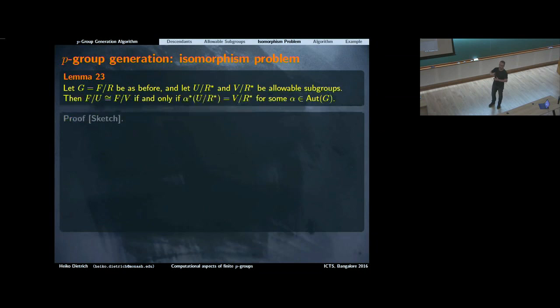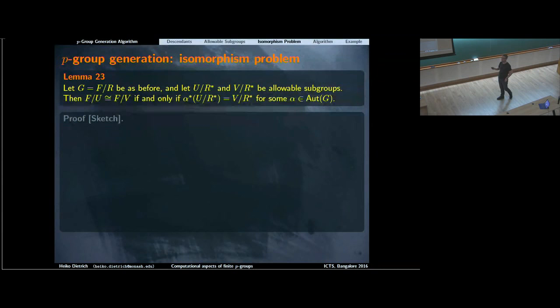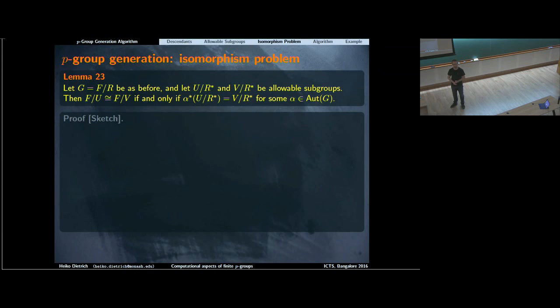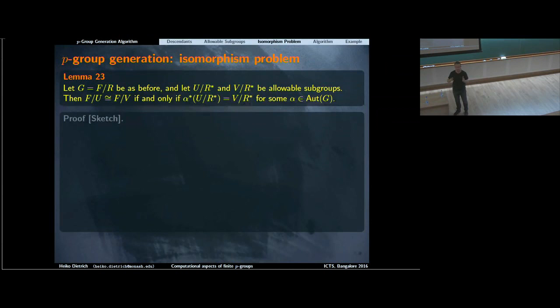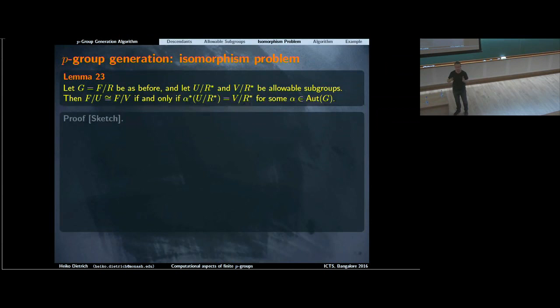This lemma solves the isomorphism problem for allowable subgroups. We have two allowable subgroups giving immediate descendants. The statement is: the immediate descendants are isomorphic if and only if the allowable subgroups are mapped onto each other by some extended automorphism. So the automorphism group of G acts on subgroups of the multiplicator, and two allowable subgroups give isomorphic descendants if and only if they lie in the same automorphism-group orbit.